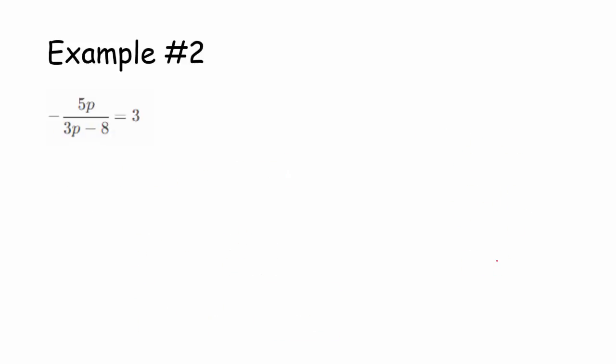So let's look at another example here. We've got negative 5p divided by the quantity 3p minus 8 equals 3. So I'm going to multiply both sides of the equation by 3p minus 8.